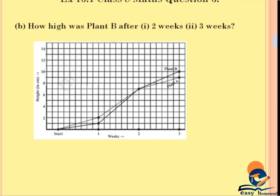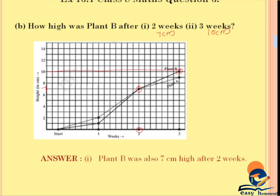How high was Plant B after 2 weeks? And how high was Plant B after 3 weeks? Plant A at 3 weeks is 10 cm. Plant B was also 7 cm high after 2 weeks, and after 3 weeks it was 10 cm high.